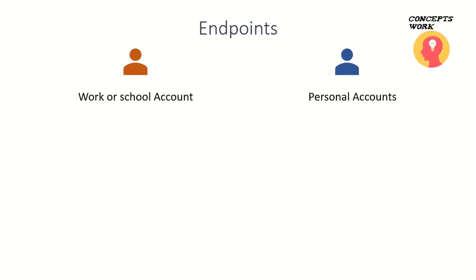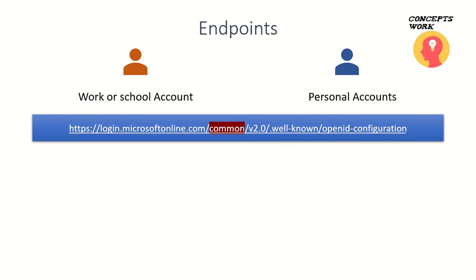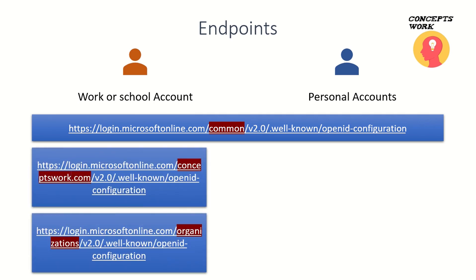Depending upon the users who are going to sign into your application, you can access different metadata endpoints. In a scenario where your application will be used by all types of users — work or school accounts from a directory, or users with personal consumer identities like Outlook, Live, or Hotmail — you have to access the common v2.0 endpoints to get the list of endpoints for the authentication flow.